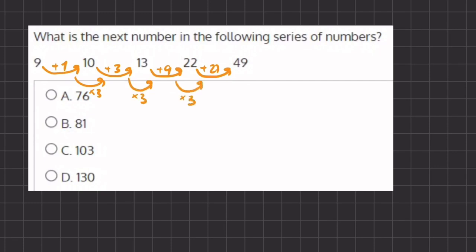And if we want to find our next missing value here, what we're adding by, we have to multiply 27 by 3, which will give us 81.